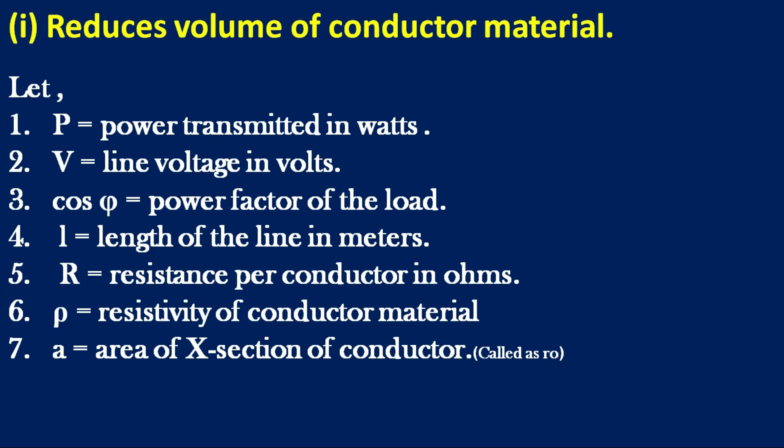The definition of P is power transmitted in watts, V is line voltage, and cos phi is the power factor of the load. L is the length of the line, and R is the resistance per conductor in ohms.